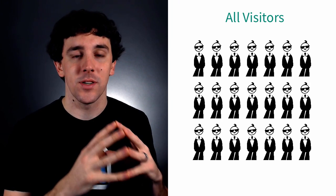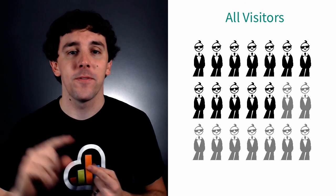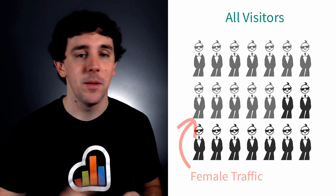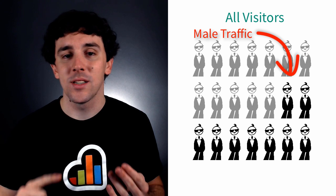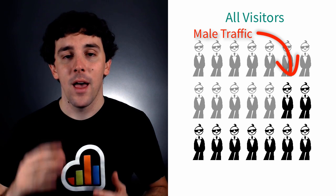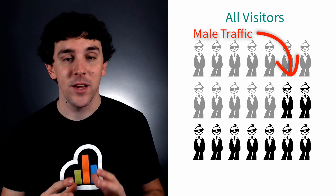What segments allow you to do is group people with similar characteristics together and see their numbers on that graph. For instance, you could see every female that's come to your website, how many males have been there, people from a specific location. You can see of that traffic in the last month how much has been new visitors, how much has been returning visitors. You can see all that information and make it actionable for your website. Simply put, segmentation allows you to easily group visitors to your website by similar characteristics.